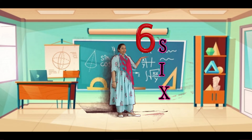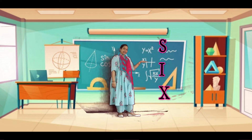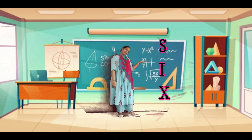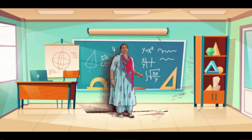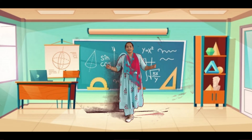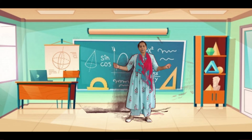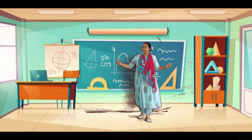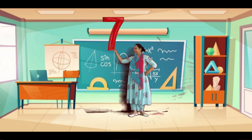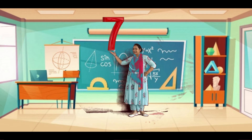Now see here, number Six. Number six spelling children: S, I, X. Six.